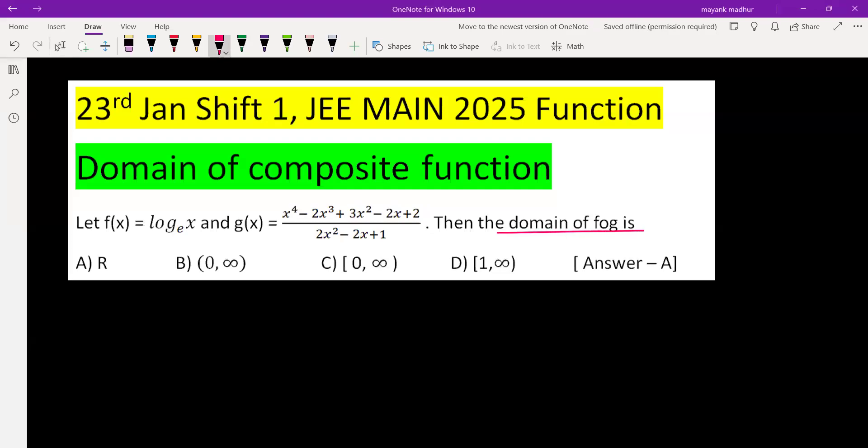We have to find the domain of f of g, which is a composite function. f is having input as gx, so what is f? f is log, so log of gx. The input of this composite function is gx, so gx is x⁴ - 2x³ + 3x² - 2x + 2 divided by 2x² - 2x + 1.